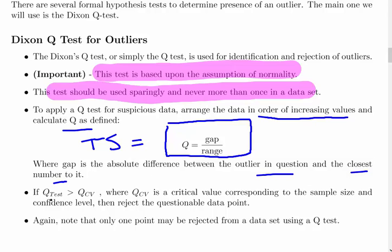If the test statistic is greater than the critical value QCV, where QCV is a critical value corresponding to the sample size and confidence level, then we reject the questionable data point. Again, note that only one point may be rejected from a data set using the Q test. You can't use it sequentially - if another one looks awkward, this test is invalid. It does not have the required assumptions for making the test for a second outlier once the first one has been omitted.